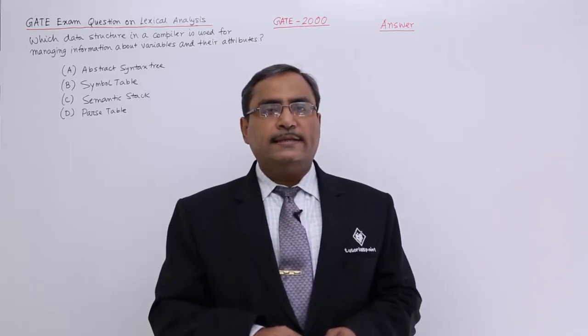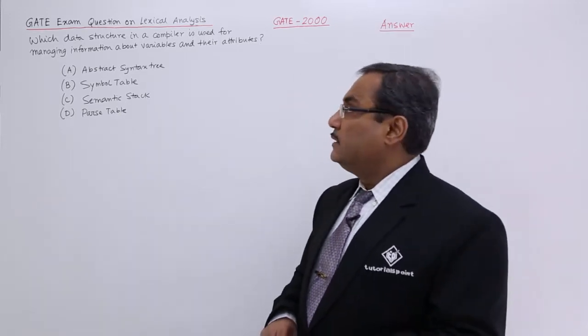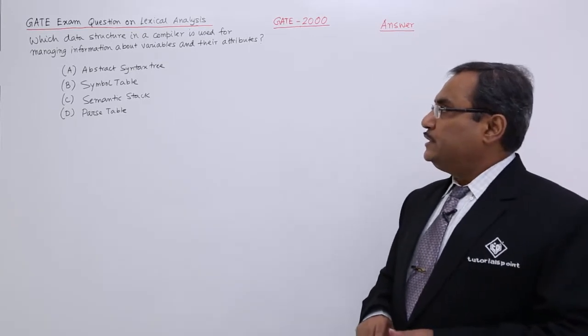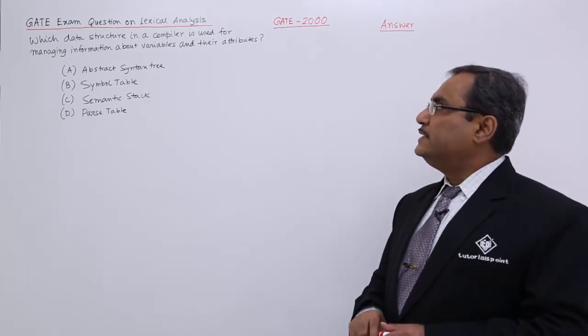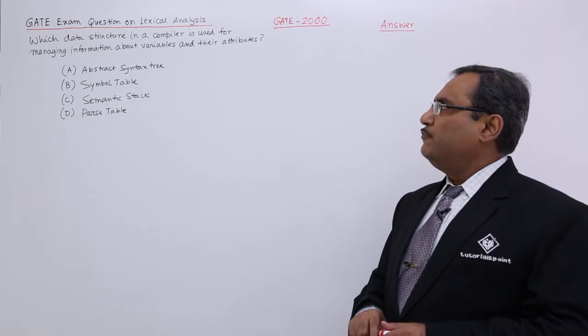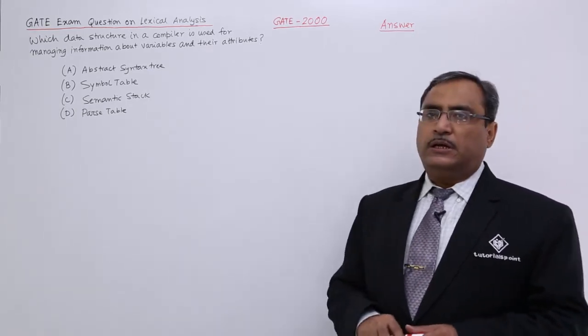We are solving another problem on lexical analysis and the problem is like this: which data structure in a compiler is used for managing information about variables and their respective attributes?